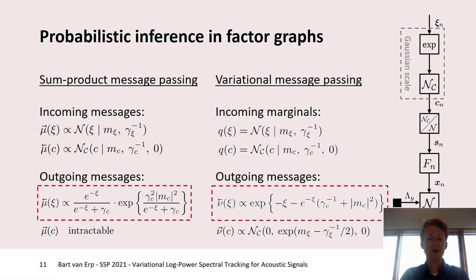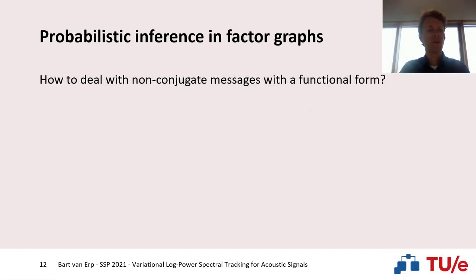The problem with this message passing is that the messages towards psi do not belong to a common distribution. Because they are non-conjugate, the resulting marginals obtained by multiplying messages on the specific edge become intractable for future inference. So how can we deal with these non-conjugate messages whose functional form does not directly coincide with a common distribution?